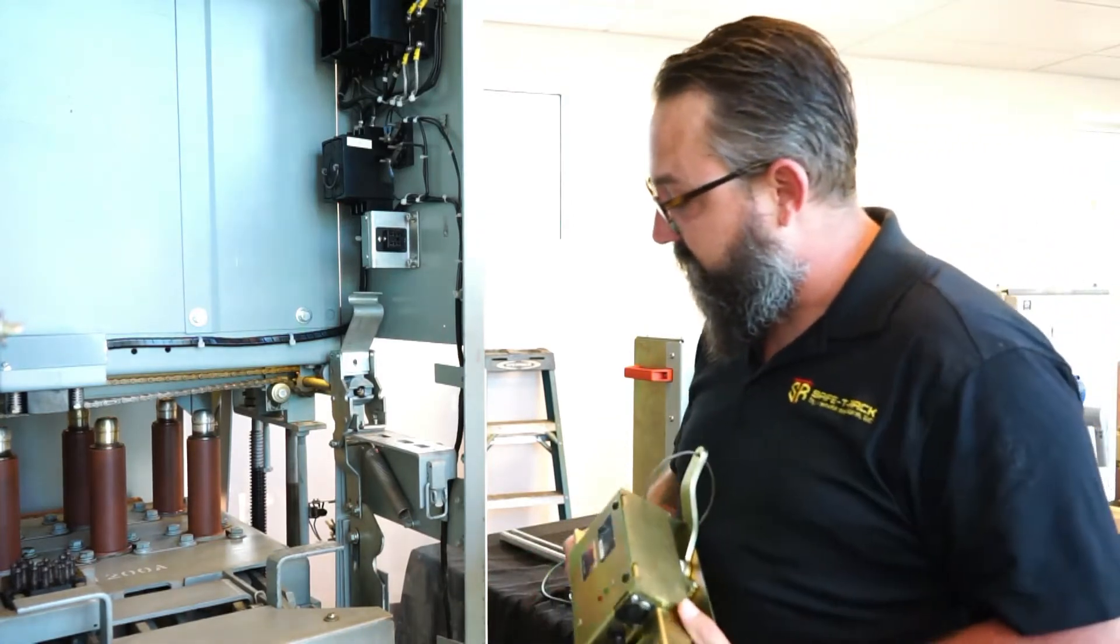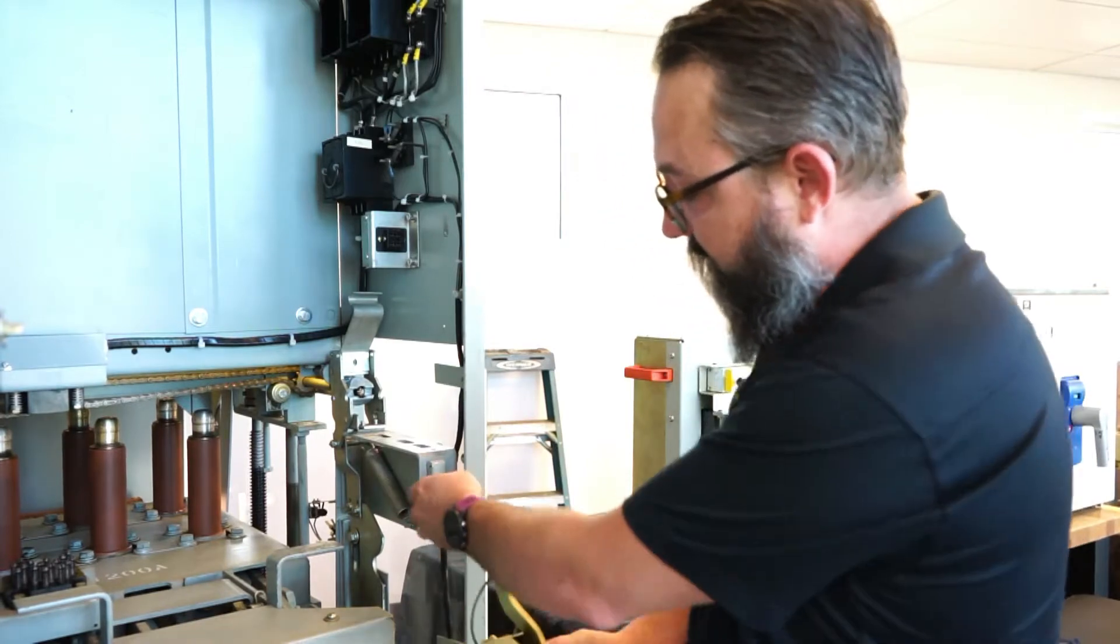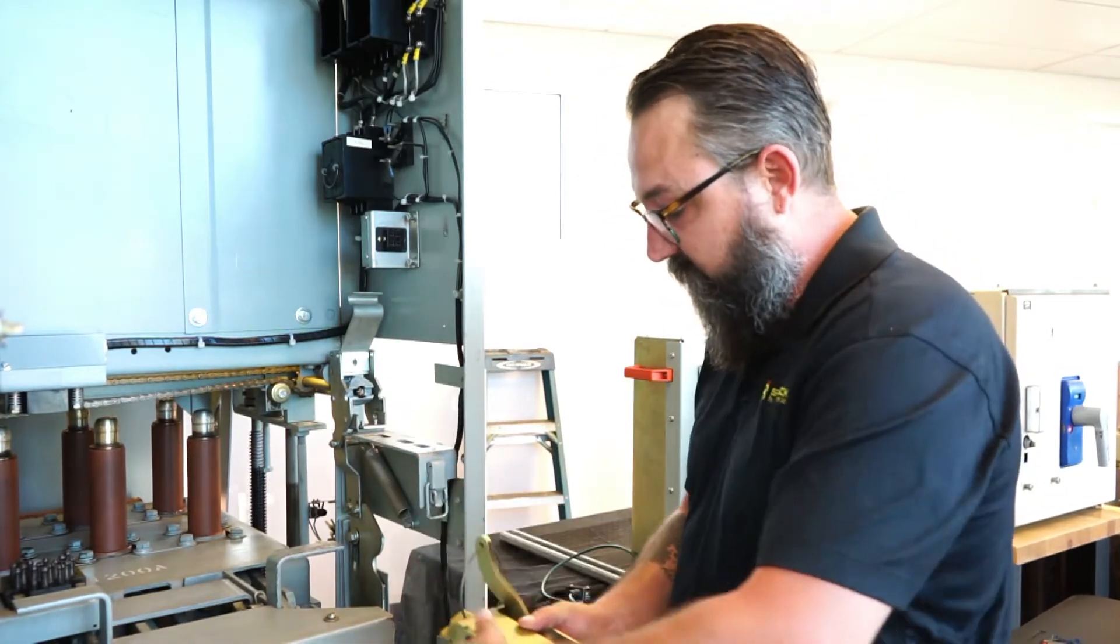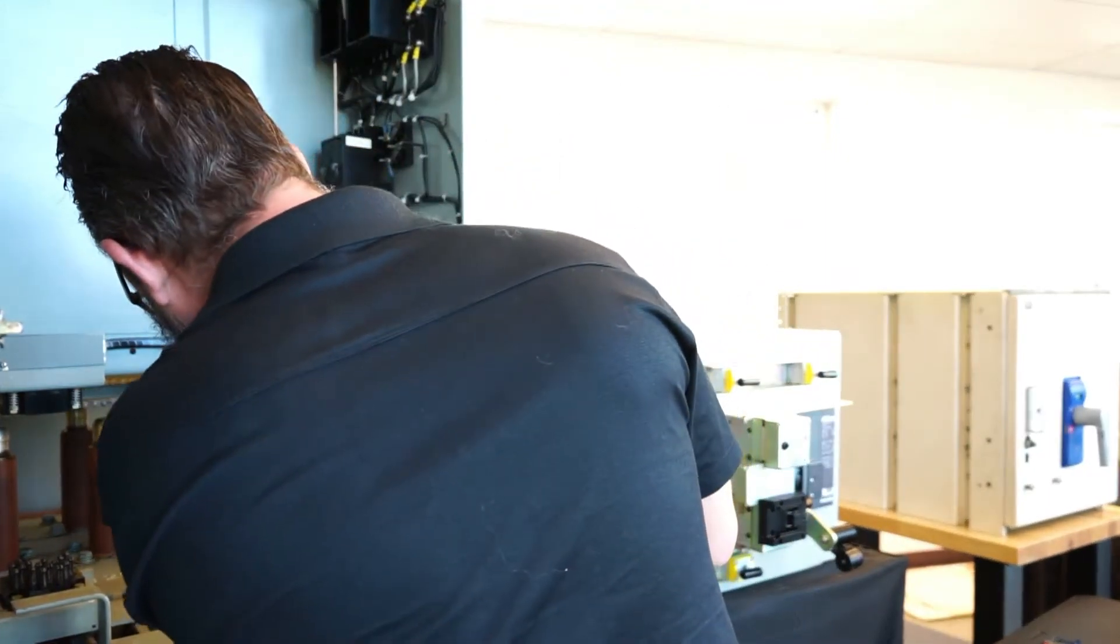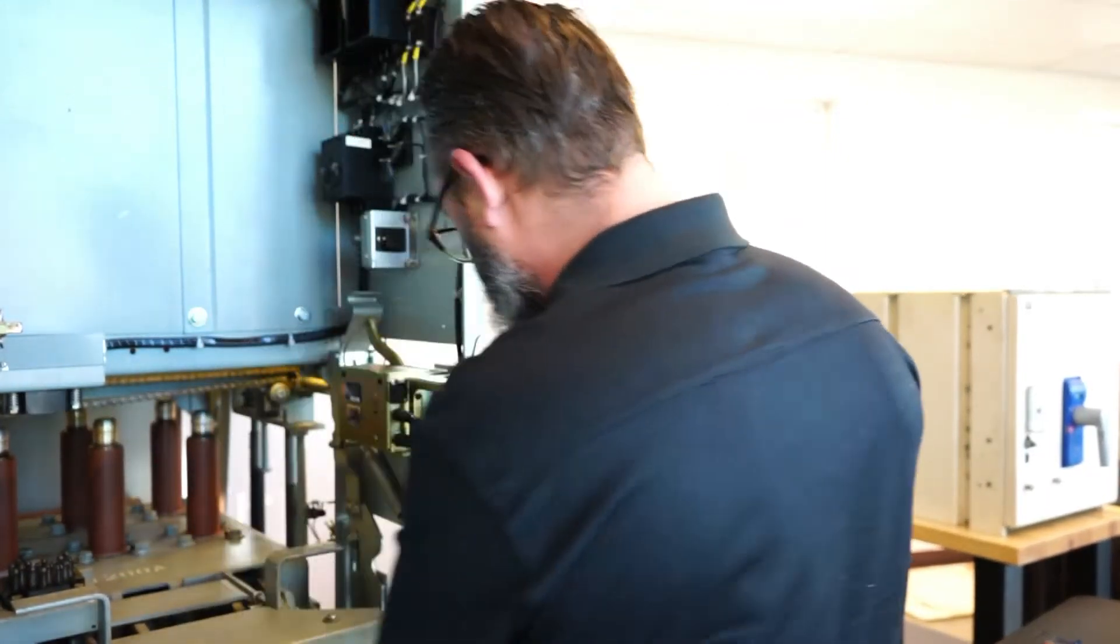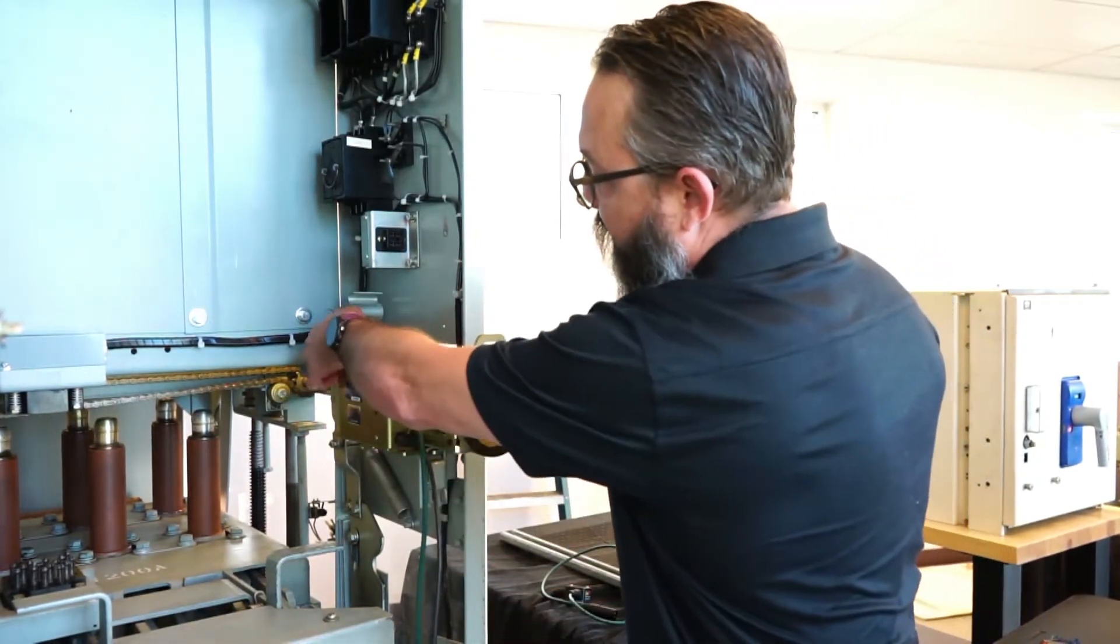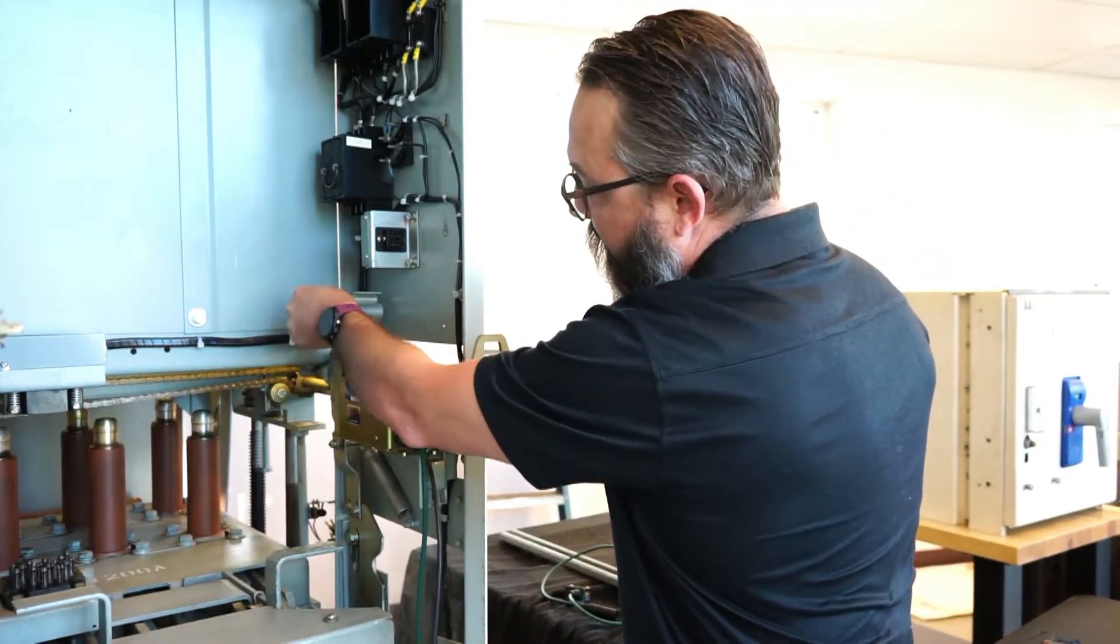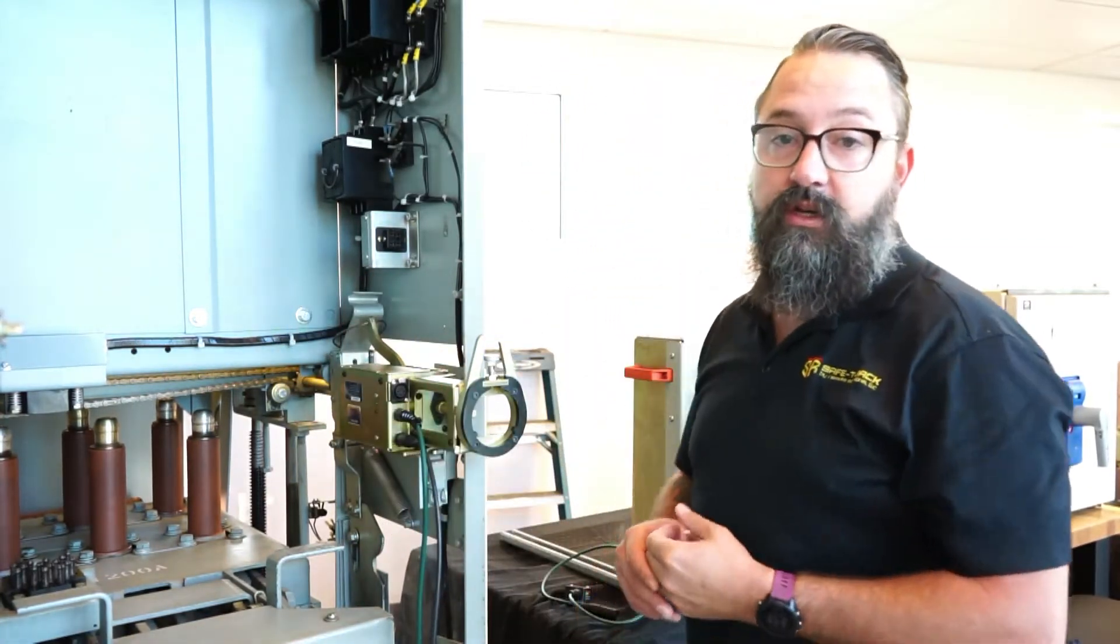It mounts on existing motor mounts right here using two pins and a latch device right here. Go ahead and set that in place. Lock that down. And then you can see back here we have a ring that comes up over the clutch handle and it has an automated clutch and gauge.